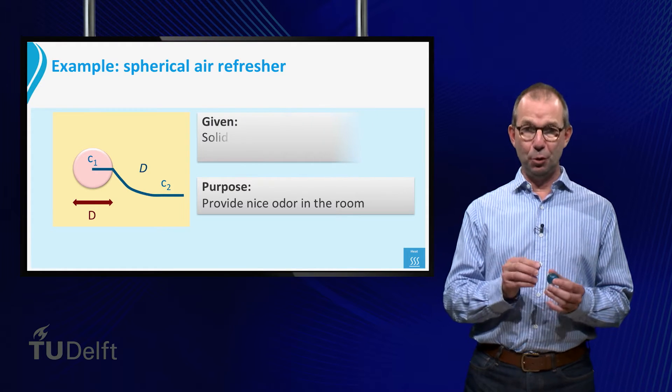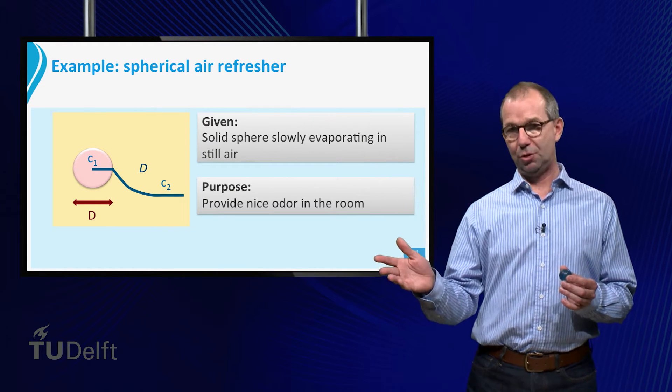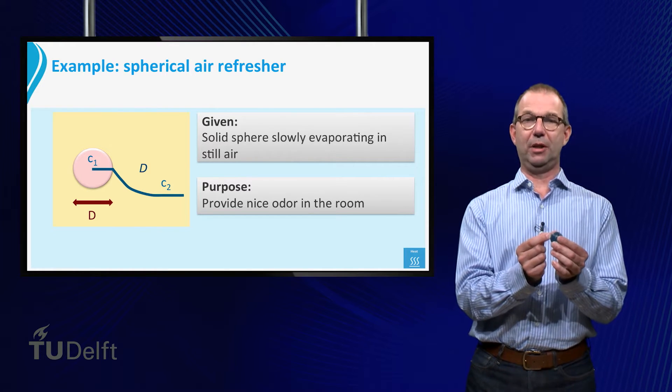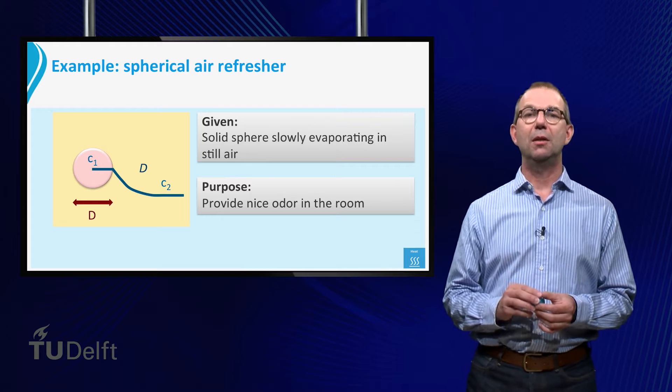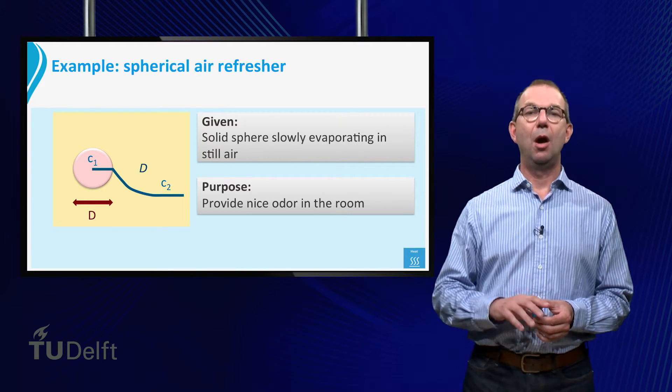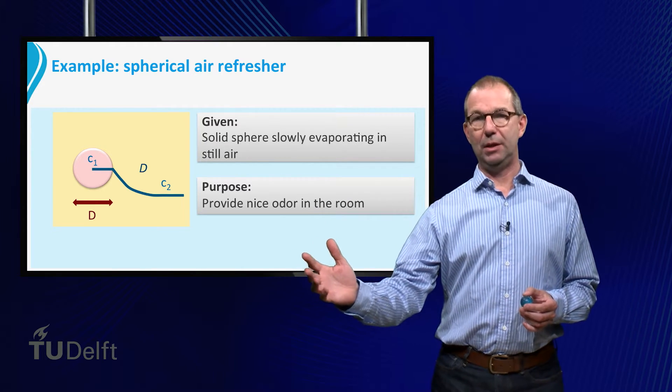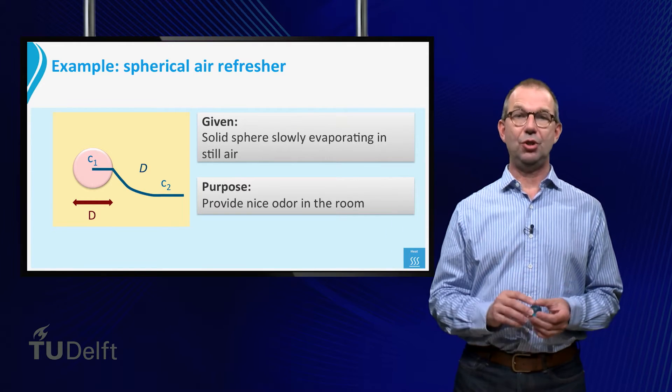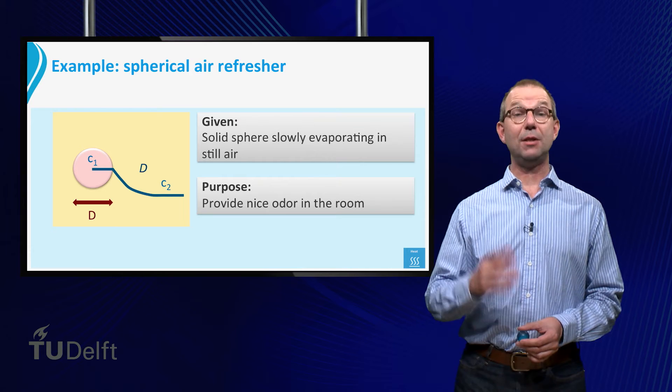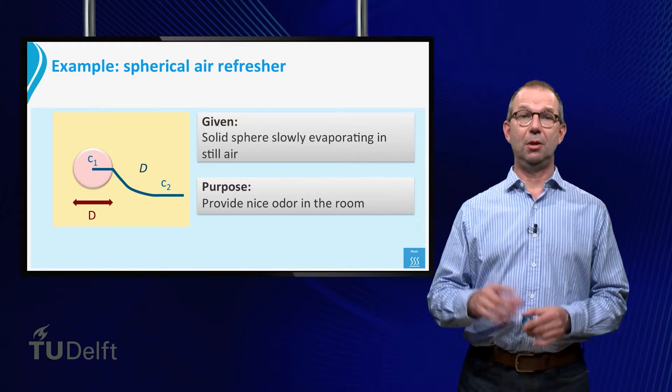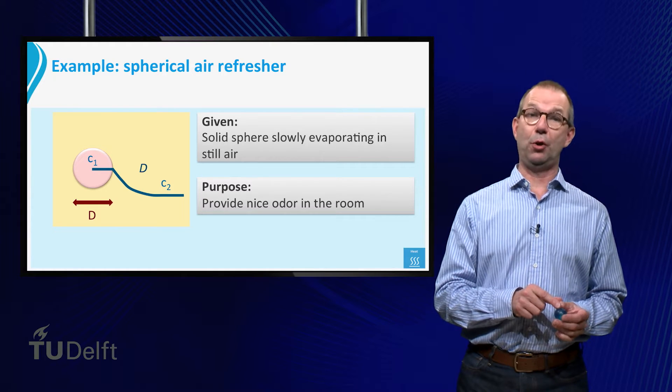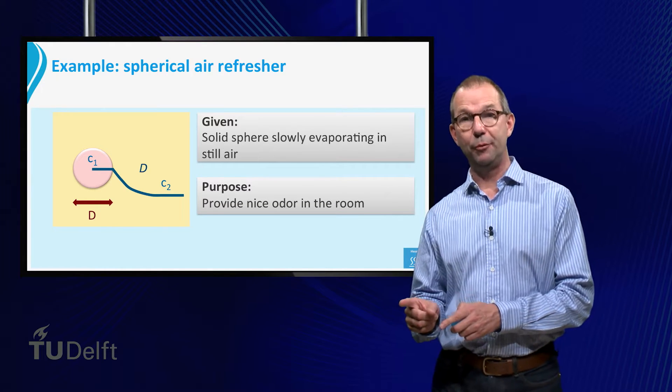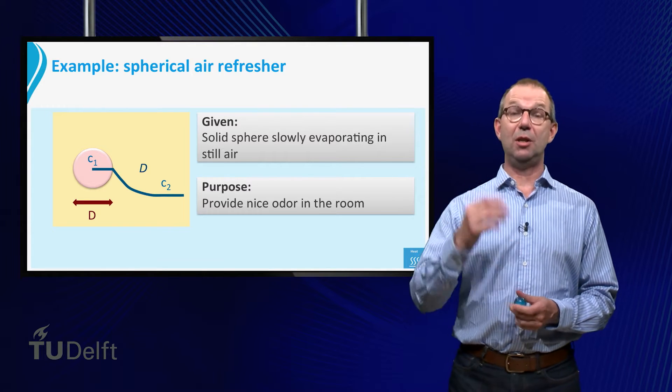The vapor is diffusing away from the sphere to the surroundings. The concentration of the vapor just at the interface of the sphere has a fixed value that we call C sub 1. Far away in the bathroom, the air contains a lower concentration of this vapor that we call C sub 2. Actually, this is much like the temperature T sub s at the surface of the hot sphere and the temperature T infinity far away from the sphere that we discussed in the previous part.